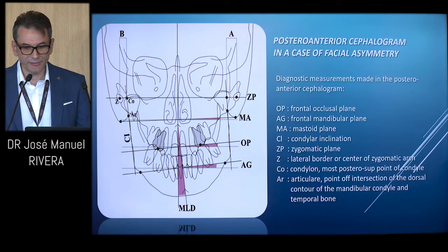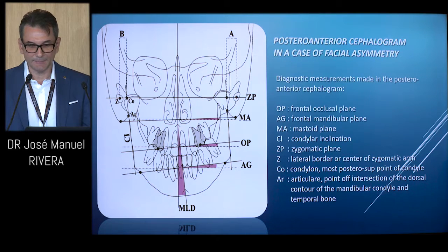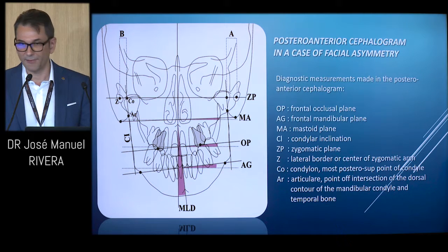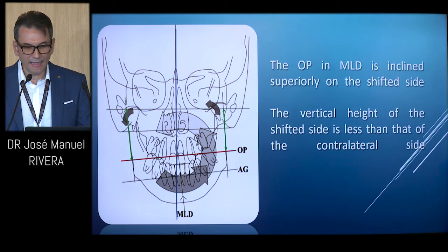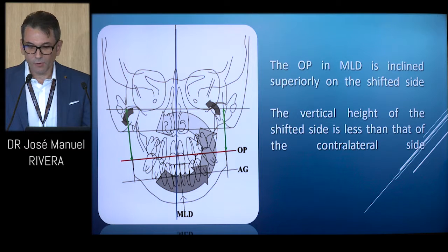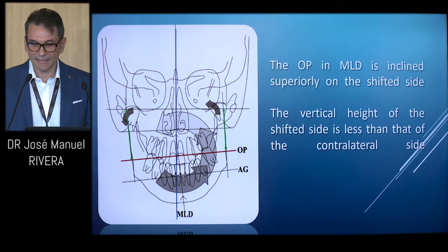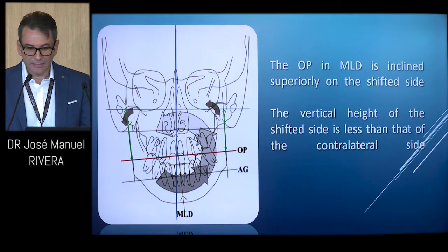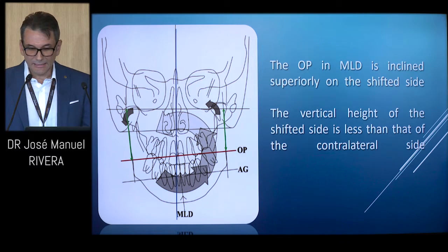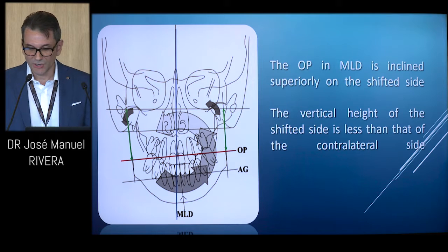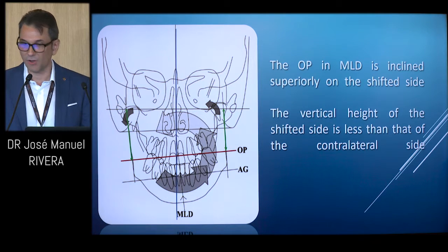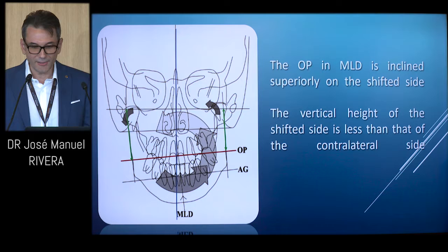Disproportions between the two sides of the jaws or joints can also be noted through the panoramic radiograph. Supplemental posterior cephalograms are taken to record the degree of facial asymmetry. The occlusal plane in MLD is inclined superiorly on the shifted side, indicating that the vertical height of the shifted side is less than the contralateral side. The mandible rotates three-dimensionally accompanied by a tilting of the frontomandibular plane in the same direction. The condyles are shifted to the contralateral side, causing strong compression on the shifted side of the condyle and internal derangement of the TMJ.